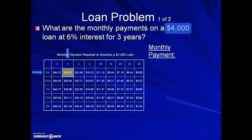However, in this example, since we're borrowing $4,000 — which is four times larger than $1,000 — if you take $4,000 and divide it by $1,000, that gives us a multiple of 4. We will multiply the monthly amount from the table by 4 to give us the monthly payment. This is the amount each month for the next three years the individual will pay for this $4,000 loan.